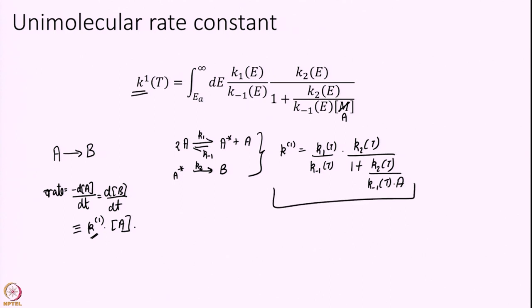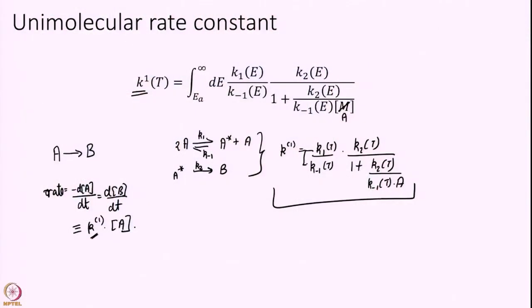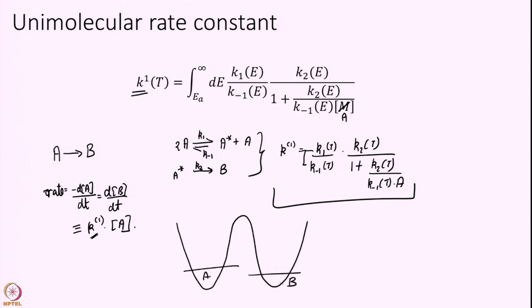The problem is that this result does not match well with experiment — there is qualitative agreement but not exact agreement. The new idea is that we were assuming K1, K−1, and K2 to be independent of each other, calculated one by one as simple numbers at a given temperature. But that may not be right. In this model, K1 takes A to A*, and at that given energy A* has either a choice to become product B with rate constant K2, or come down with rate constant K−1.